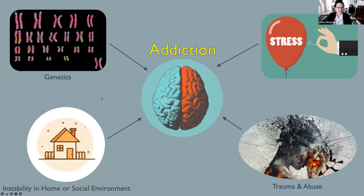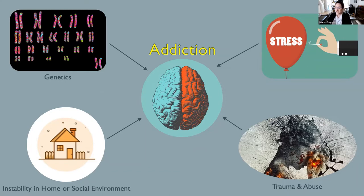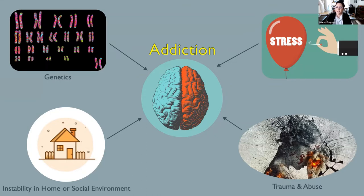Addiction is a chronic brain disorder characterized by compulsive drug-seeking and continued drug use despite harmful consequences. This disorder can affect anyone from any background, social status, race, or gender. While there's no known single factor that determines whether an individual will develop an addiction, there are several risk factors known to increase the likelihood.